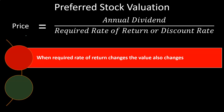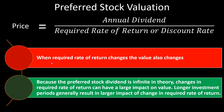When the required rate of return changes, the value also changes. Over time, the required rate of return will change — when preferred stock is issued, the issue price tries to match the market. But over time the required rate of return can change, and because the preferred stock dividend is infinite in theory, changes in the required rate of return can have a large impact on value.